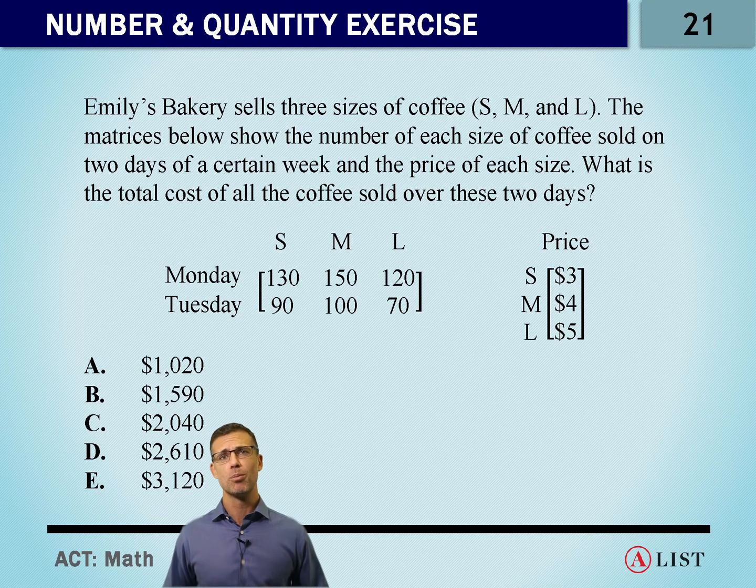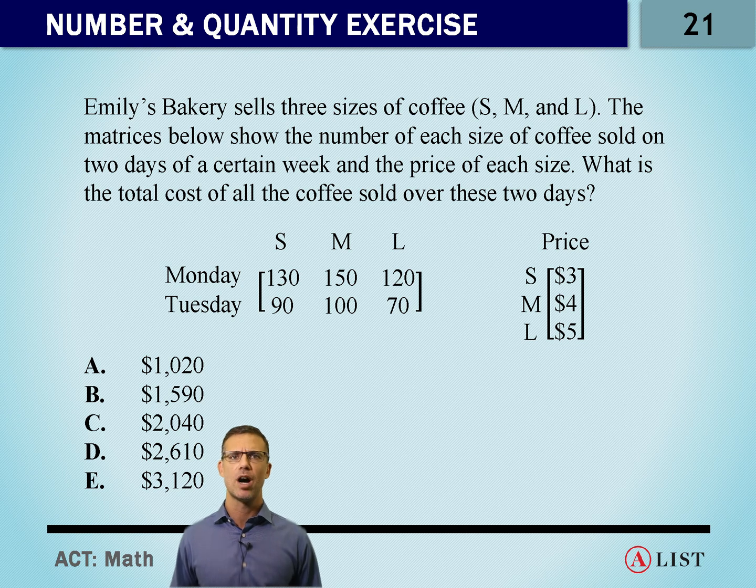Number 21. We've got a word problem here. Let's take a look. Emily's Bakery sells three sizes of coffee: small, medium, large. Weird they don't have any venti, but let's move on.